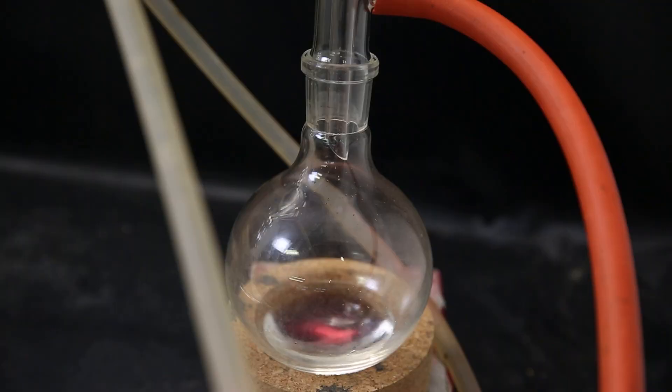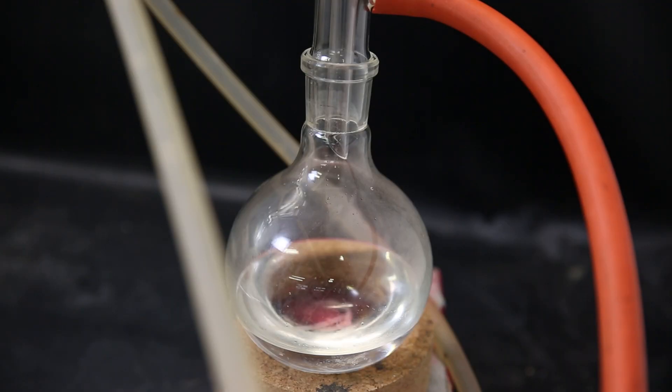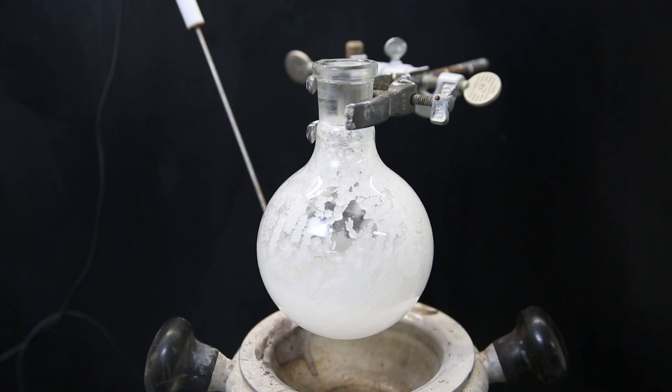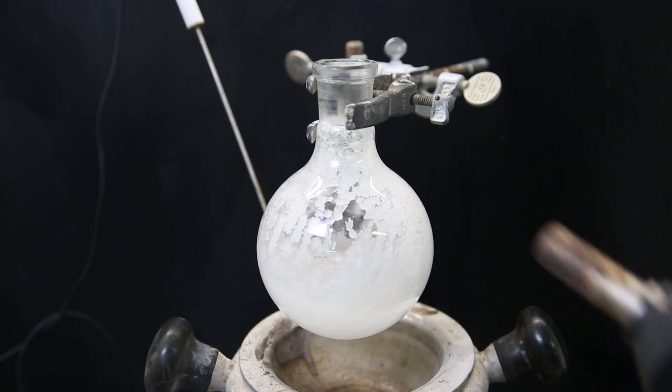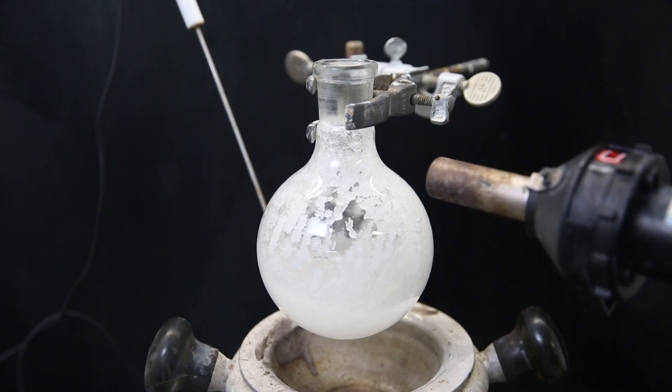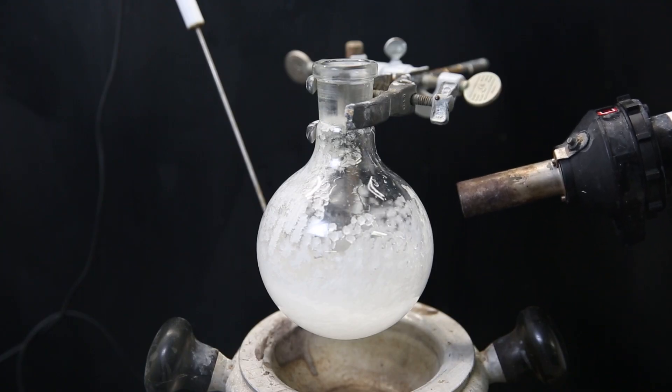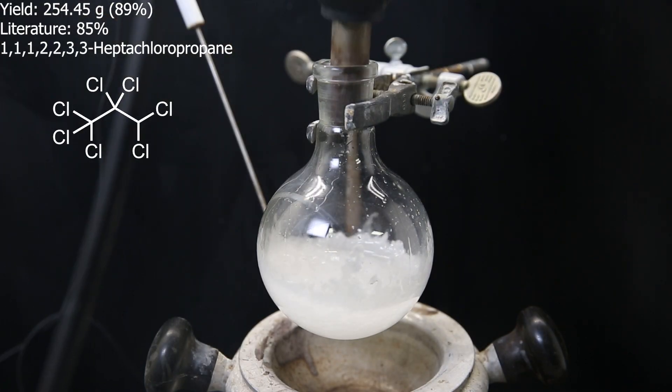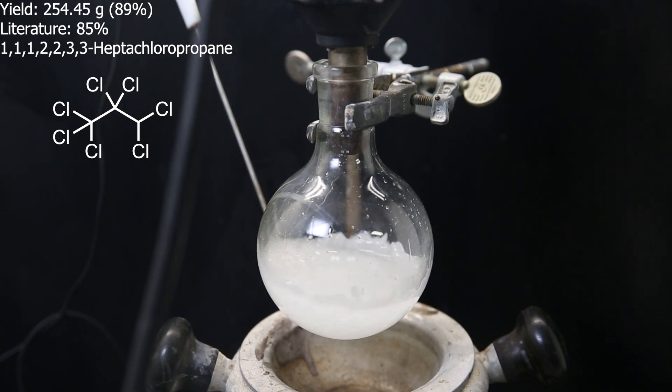After a while the product starts distilling over as a clear liquid. When it is done, all that is left in the flask is some brown crap. When I let the air into the setup, it knocked up some of the liquid and the product immediately crystallized. I melt it back down and I measure the yield to be 254.45 grams or 89%, which is higher than the literature.